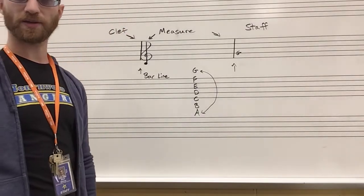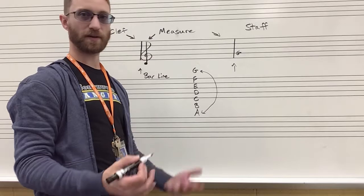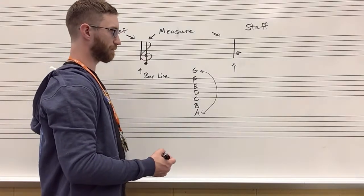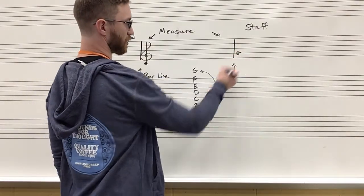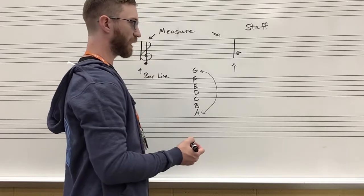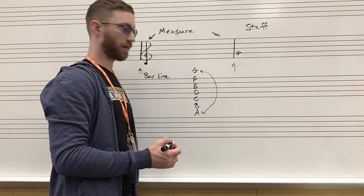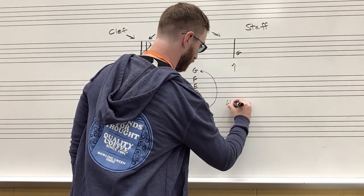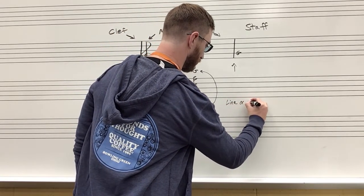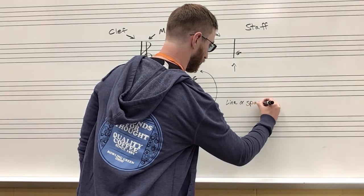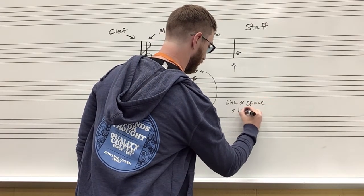There is no H note, there is no I note, no L note, no Z note, only A through G. So I know this is G. Each line and each space is going to be one letter. So line or space equals one letter.